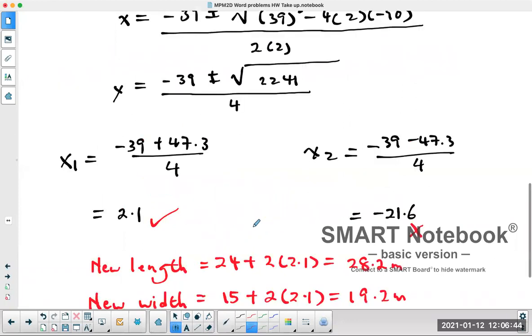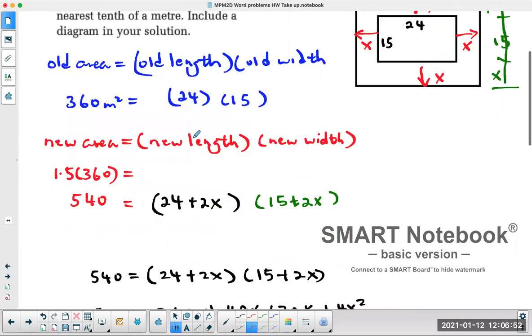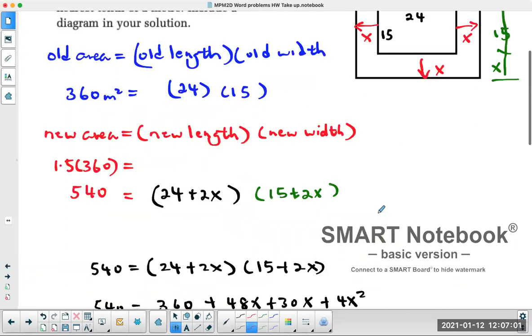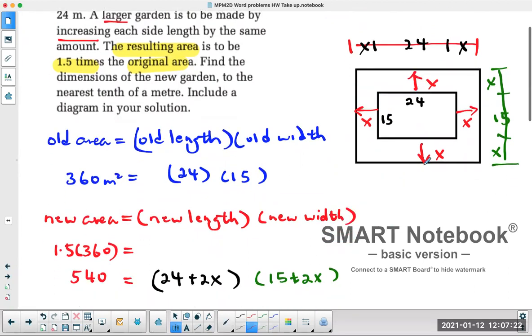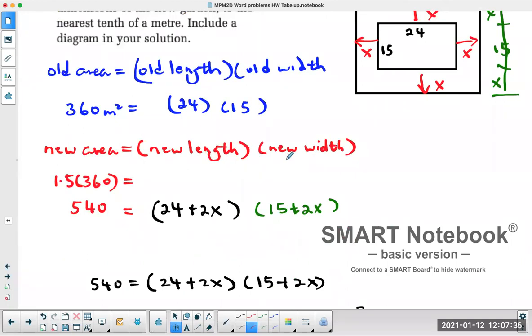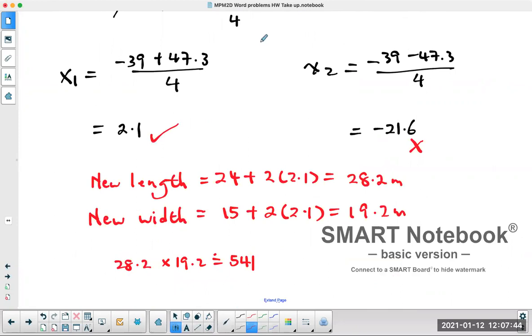So the question asks us to calculate the dimensions of the new garden, which is going to be 28.2 by 19.2. It's called a frame question. You always have the original size, length times width equals the area, and then you're remaking this garden by increasing or decreasing each of the side lengths. Make sure you have a top and bottom, left and right, so it's always plus 2x plus 2x if you're increasing, or minus 2x minus 2x if you're decreasing. New area equals new length times new width, set up the equation, expand and simplify, use the quadratic formula which will give you the value of x.